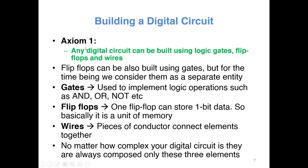These are not real axioms — I just made them up. The first axiom states that any digital circuit can be built using two types of basic elements: logic gates and flip-flops, and wires to connect them. We have different kinds of gates — AND, OR, NOT gate, etc. — and different kinds of flip-flops. We are interested in the D flip-flop, which can store one bit of data at a time. Flip-flops are the basic unit of memory. Wires are conductors used for connecting gates and flip-flops. No matter how complex your circuit is, it can always be built using gates and flip-flops as long as it is digital in nature.